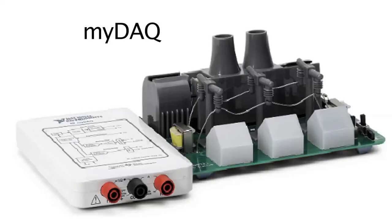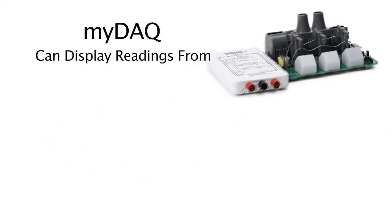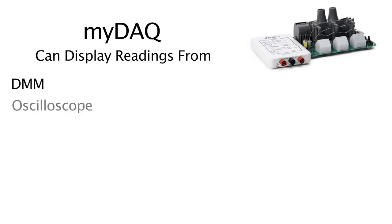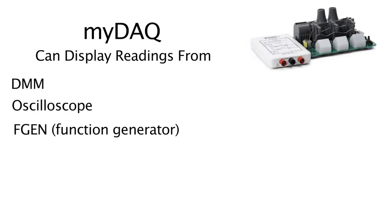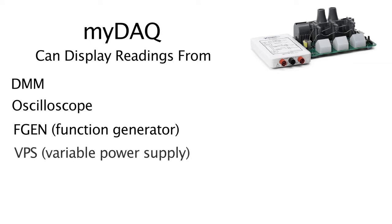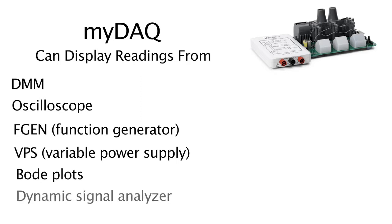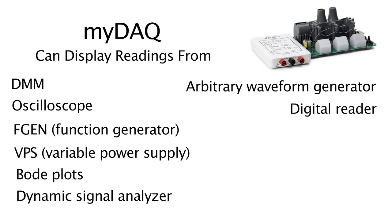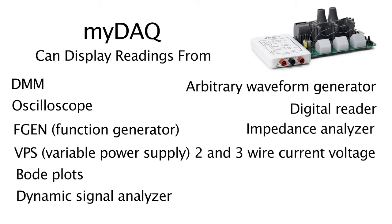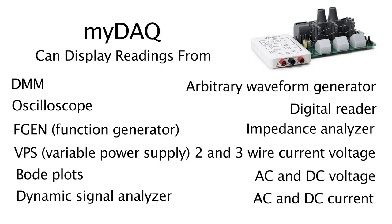This MiDAG system has the capabilities of displaying the readings from a DMM, an oscilloscope, FGN (function generator), VPS (variable power supply), Bode plots, dynamic signal analyzer, arbitrary waveform generator, digital reader, impedance analyzer, 2 and 3 wire current voltage analyzer, AC and DC voltage, AC and DC current, resistance, capacitance, impedance, diode, and continuity.